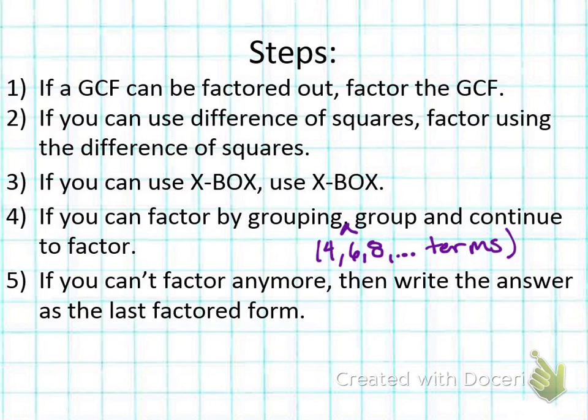If we have three terms then we're going to use X-box. We just use factor by grouping for four or more even terms. Once you can't factor anymore, you'll write your final answer as the last factored form. Don't forget the GCF when you're writing your answer.